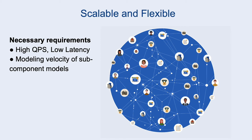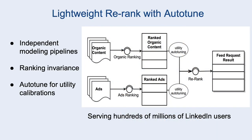Finally, the solution needs to work at internet scale and facilitate modeling velocity for each subcomponent. Our system architecture consists of independent modeling systems for organic content and sponsored content. The re-rank algorithm in our solution merges the rank lists from these two components while preserving the order within each list. The auto-tune component calibrates utility scores with minimum human intervention when input models evolve.